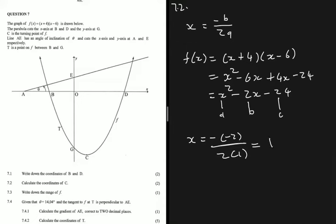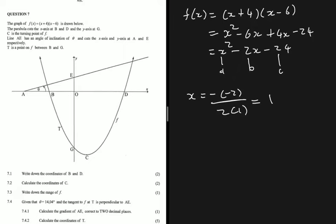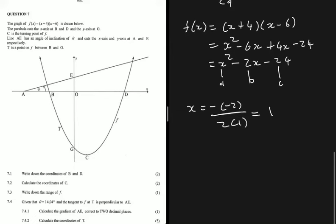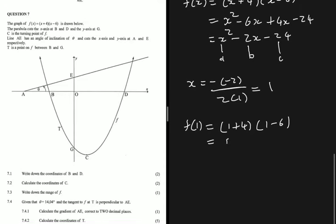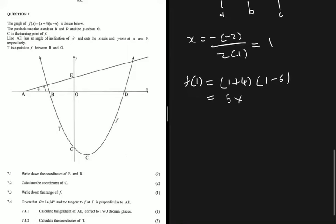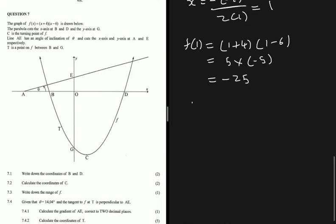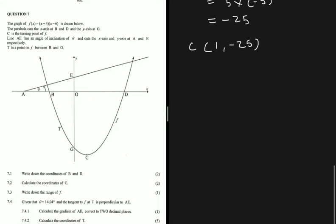To find the y-coordinate of the turning point, we substitute x = 1 into the equation: f(1) = (1 + 4)(1 - 6) = 5 × (-5) = -25. So the coordinates of C are (1, -25).